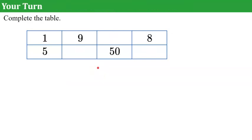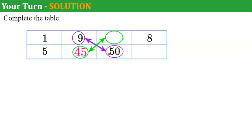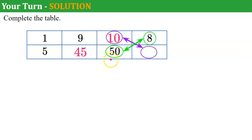Your turn. I would like you to pause the video, complete the ratio table, and come back and hit play when you're done. Welcome back. Let's use our cross-product property. 9 times 5 is 45, and 1 times 45 is 45. Next: 9 times 50 is 450, and 45 times 10 is 450. Next cross-product: 50 times 8 is 400, and 10 times 40 is 400.